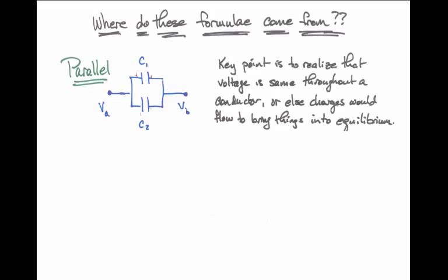As a result, on the left plate of capacitor C1 is the same voltage as the left plate of capacitor C2. And on the right plate of capacitor C1 is the same voltage as the right plate of capacitor C2. And these both have to equal V sub B.